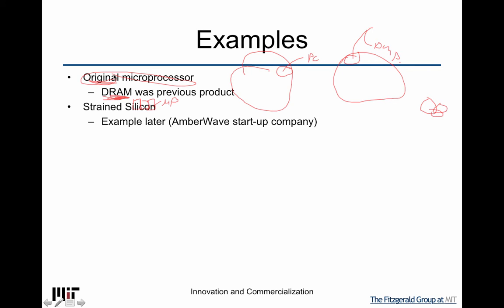Strained silicon is our own story. Most of the time before this, in the decade or so preceding, people didn't really believe a new material would ever get into mainstream manufacturing. The ability to make silicon essentially have mobility near gallium arsenide, without having to introduce new elements, was a fundamental shift. It was really unanticipated and took years to arrive — it's essentially a 20-year story.